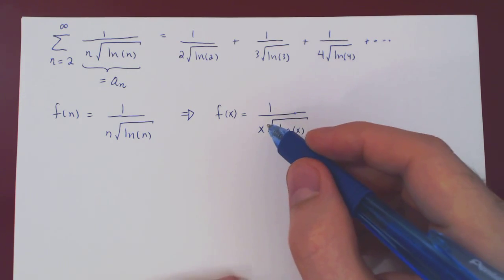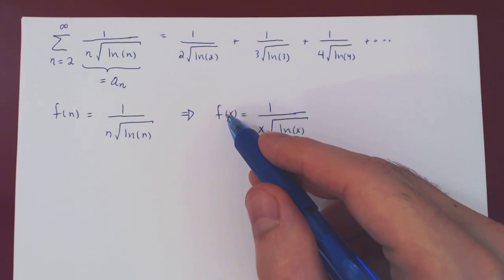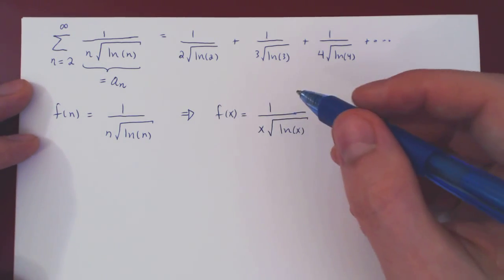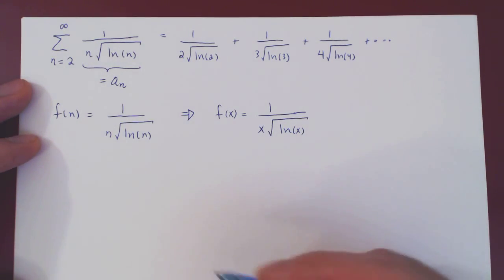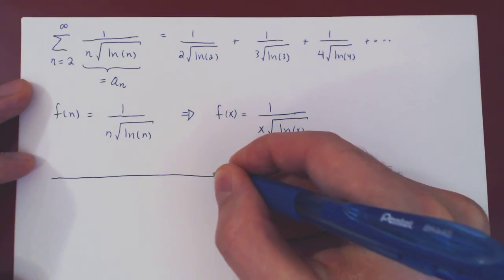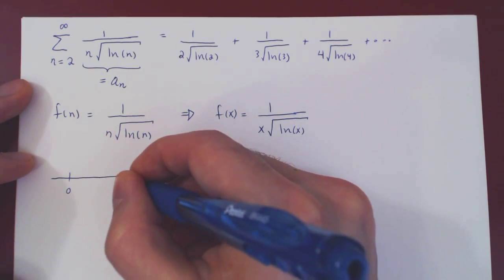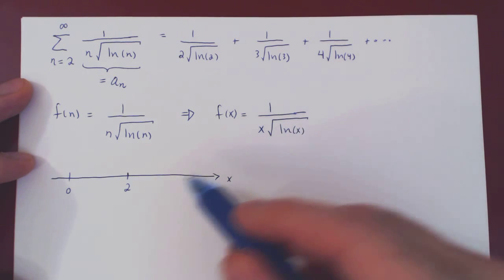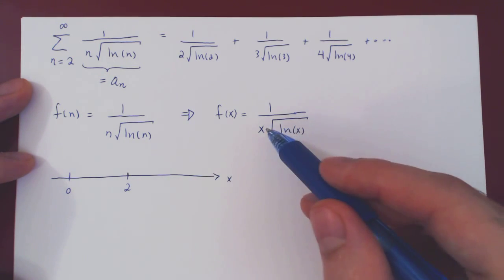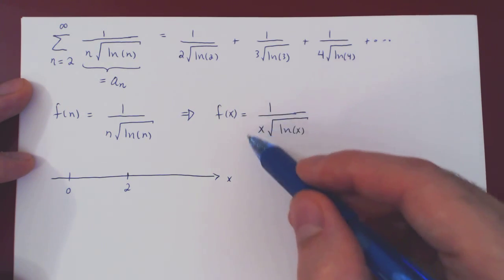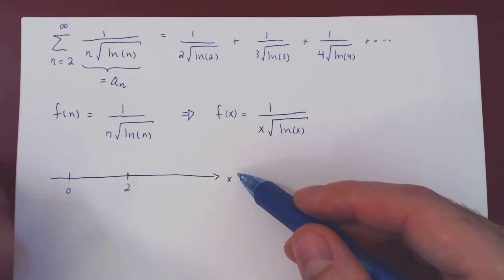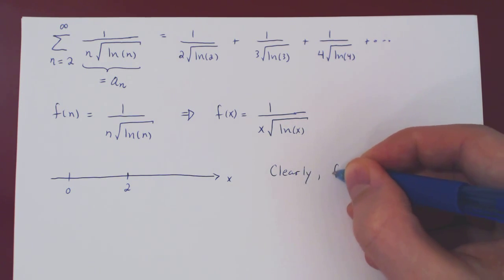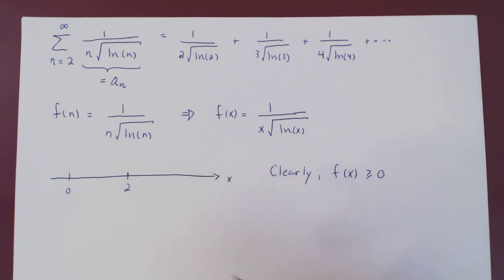Before we can apply the integral test though, we have to make sure that f satisfies the two conditions. That it is eventually non-negative and eventually decreasing. But both here are trivial. We're summing from 2 to infinity, so you can look at the real line. When x is above 2, when x is positive, x is positive. ln of 2 and above is positive, so the root of something positive is positive. So then f is 1 over something that is always positive from 2 and beyond. So clearly f of x is non-negative from 2 to infinity. First condition is trivially satisfied.